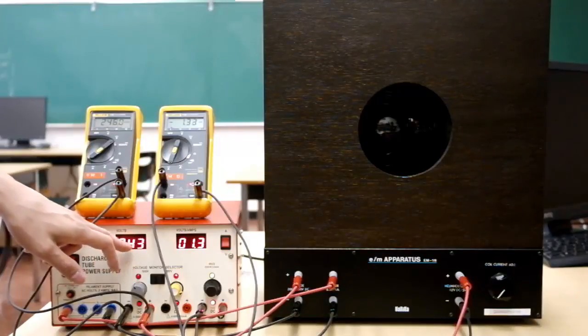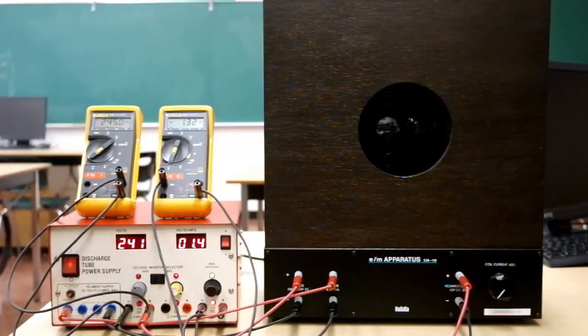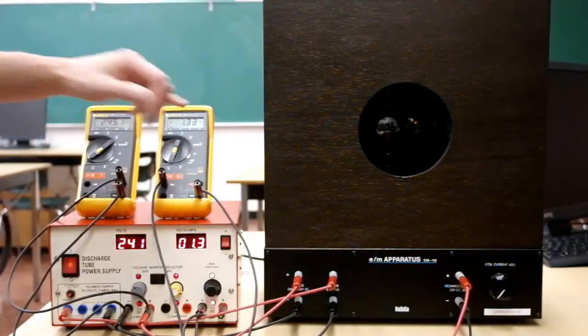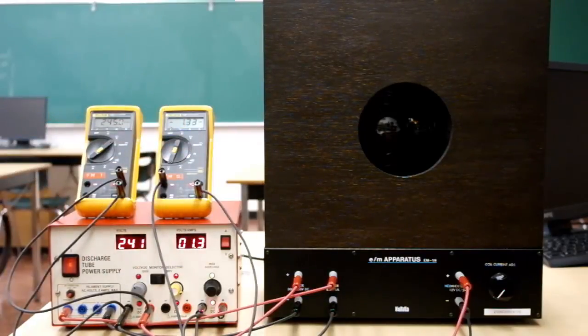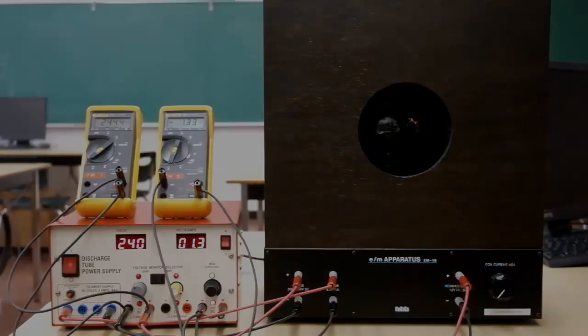So while this is reading 243, this is reading 245.0. Both of these are giving you extra digits, and from that you can get good graphs and hopefully find a good value for your E over M. Thanks, we'll see you in the lab.